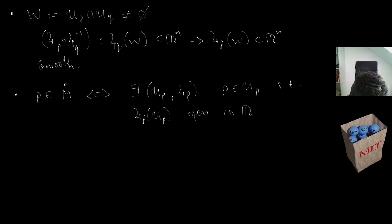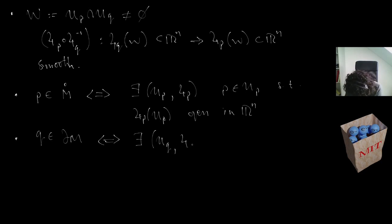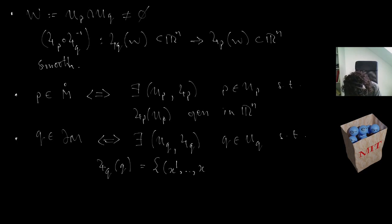We say q is in the boundary when we find a chart such that ψ_q of q equals the point (x_1, ..., x_n) satisfying x_n equals zero.